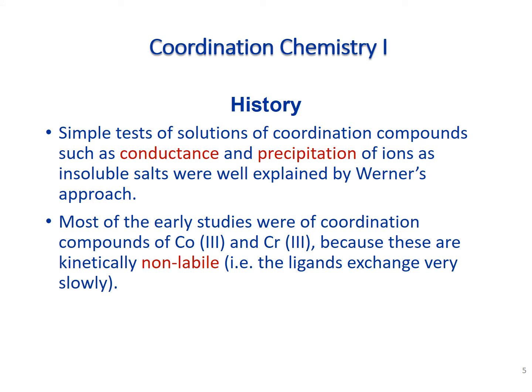Werner mostly used cobalt-3 and chromium-3 complexes, partly because they were relatively stable. We would say the ligands are kinetically non-labile, meaning they exchange very slowly, so the compound was stable enough to observe. If the ligands exchanged too fast, conductance or precipitation experiments would be challenging, because things would be able to switch between inner sphere and outer sphere coordination, making it hard to study the inert coordination complex.